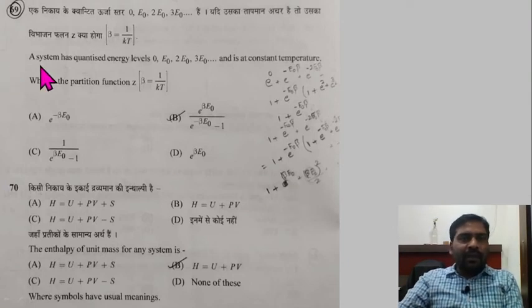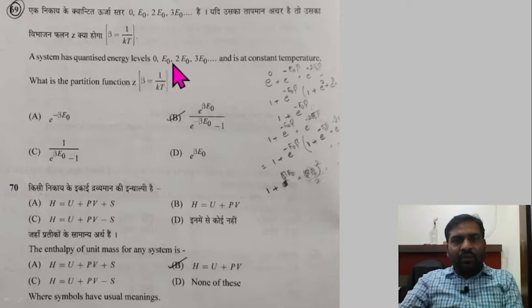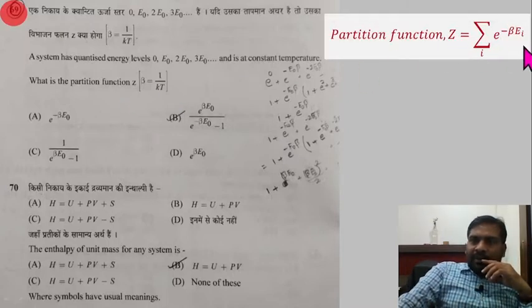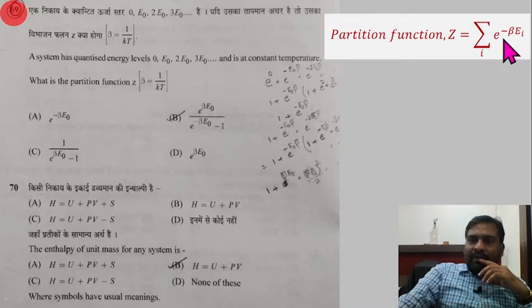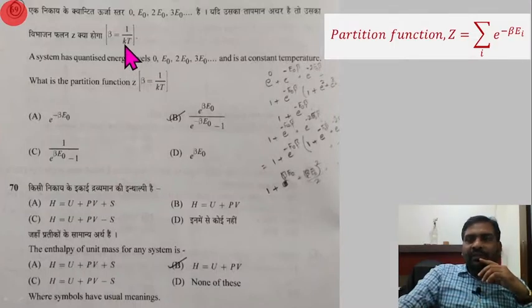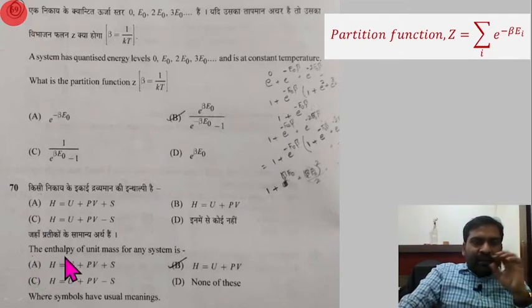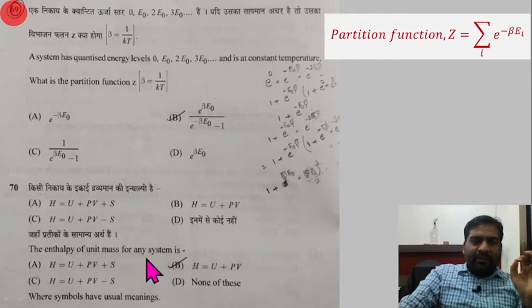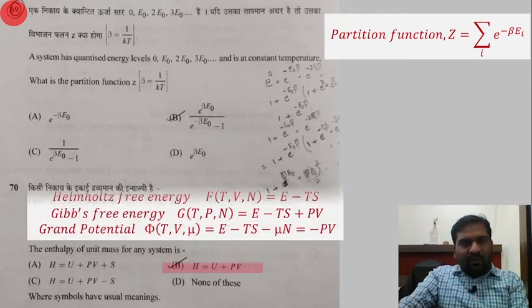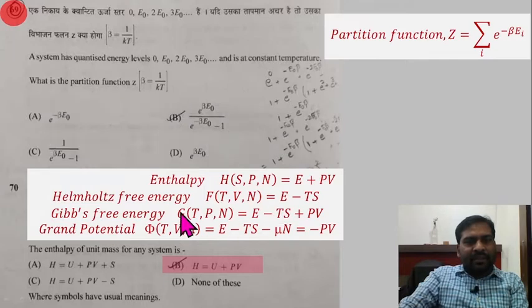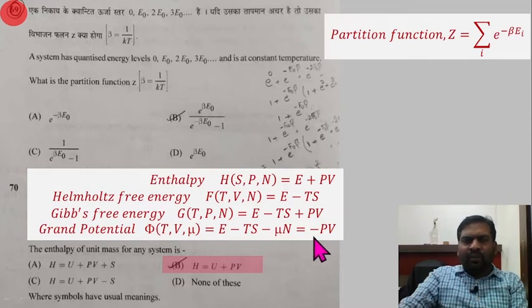Question 69: A system has quantized energy levels 0, E0, 2E0, 3E0 at constant temperature — what is the partition function? The formula is Z = summation over i of e raised to power (minus beta times Ei), where beta = 1/(kT), k is Boltzmann constant, T is absolute temperature. No correct option was available, so this question was removed. Question 70: The enthalpy of unit mass of a system is H equals E plus PV. If asked for Helmholtz free energy: E minus TS. Gibbs free energy: E minus TS plus PV. Grand potential: E minus TS minus μN equals minus PV.